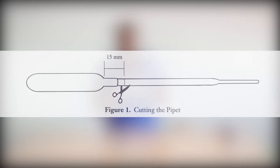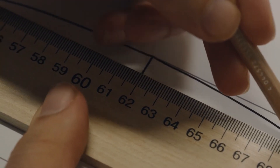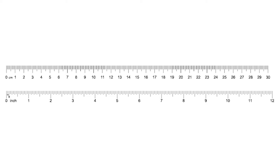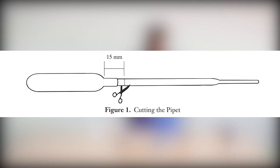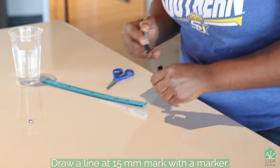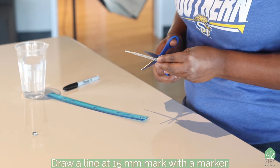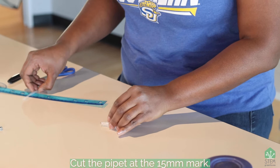To make the Cartesian diver, we will be measuring 15 millimeters of the pipette stem. The pipette has a bulb part, which is the part that you squeeze and release to suck up fluids, and then the stem part picks up the liquid. Our rulers have two types of measurements — one side has inches, but today we're going to use the metric side with centimeters. There are 10 millimeters in every centimeter, so we measure 15 millimeters — halfway between the one and two centimeter marks — and mark it, then cut the pipette right there.